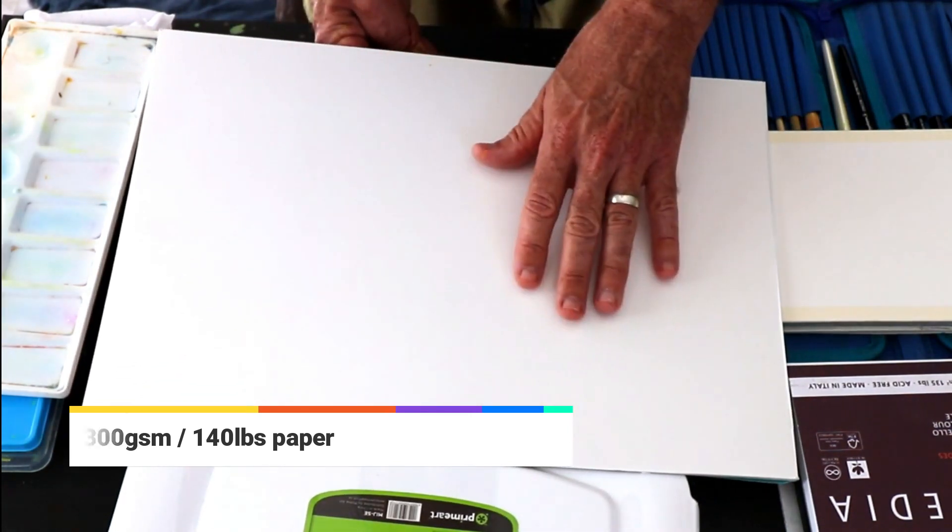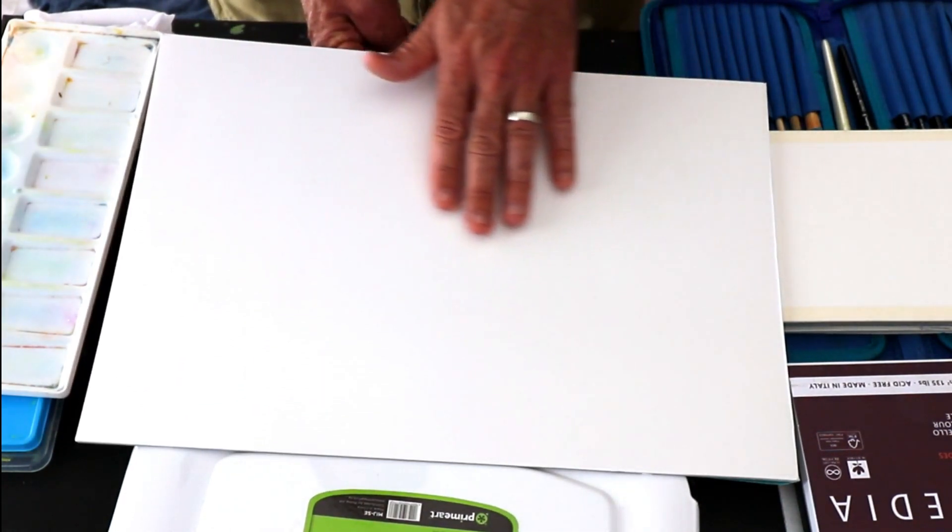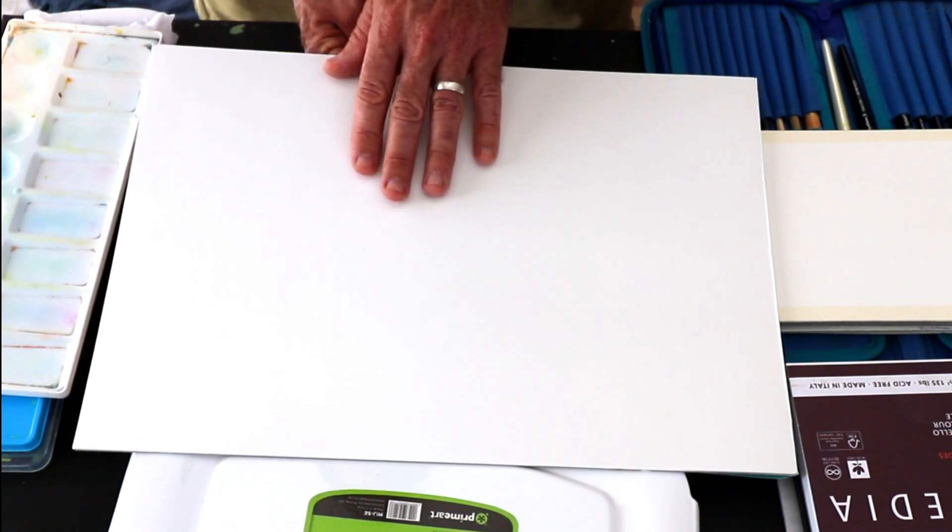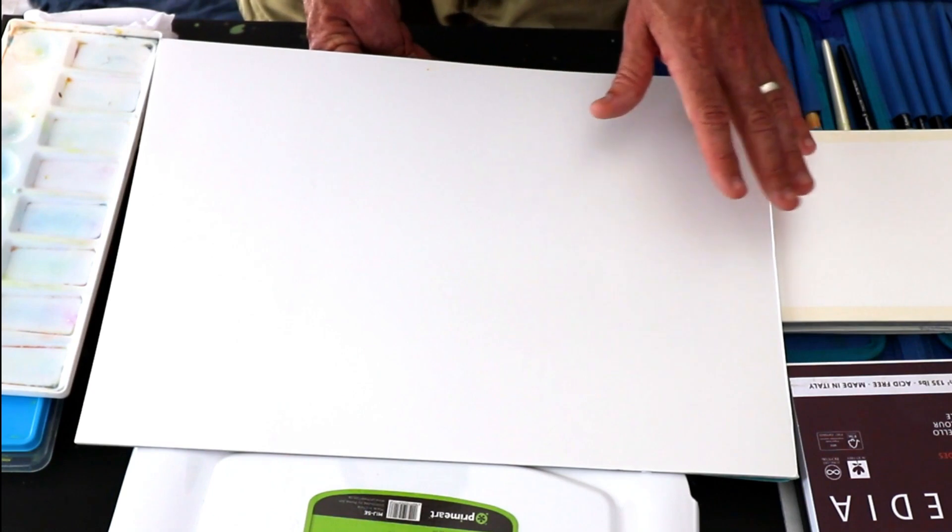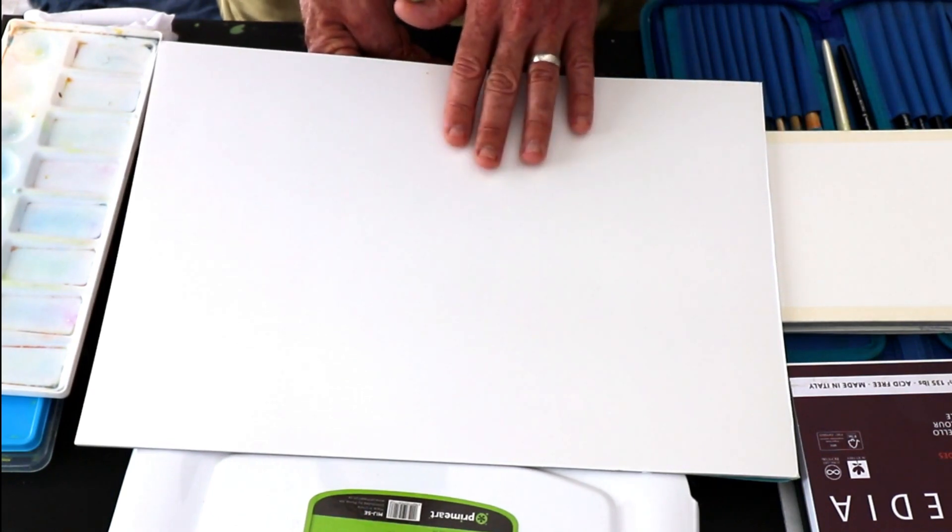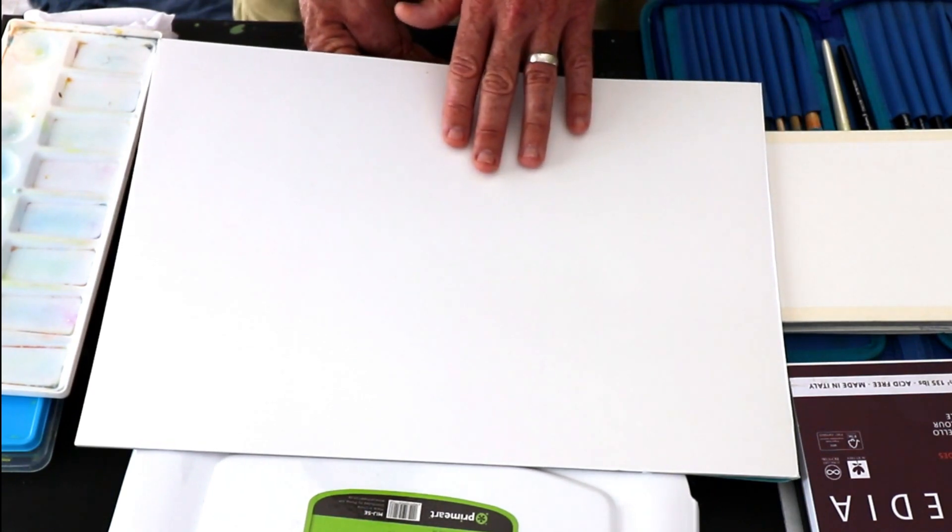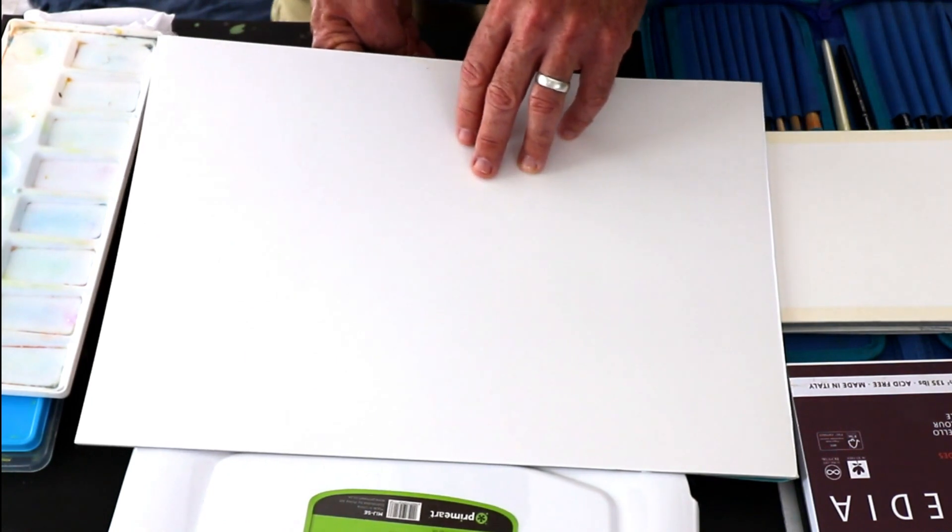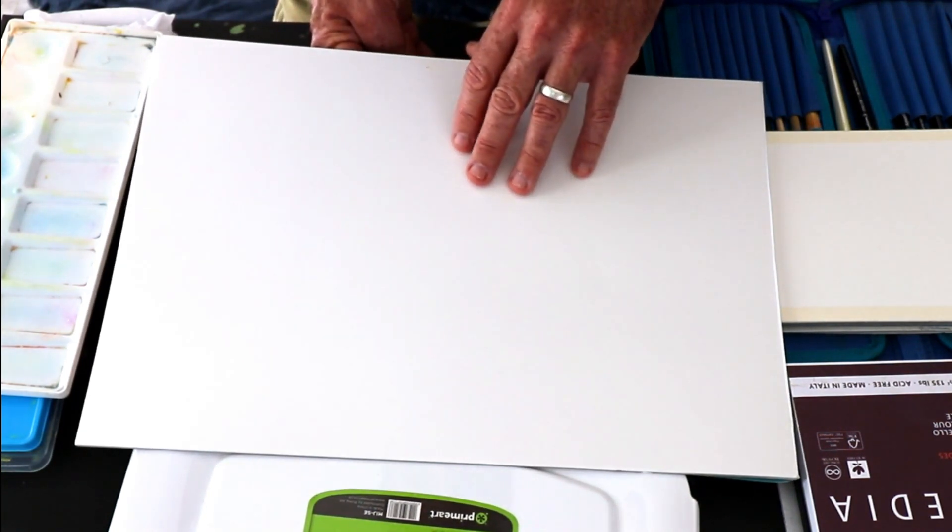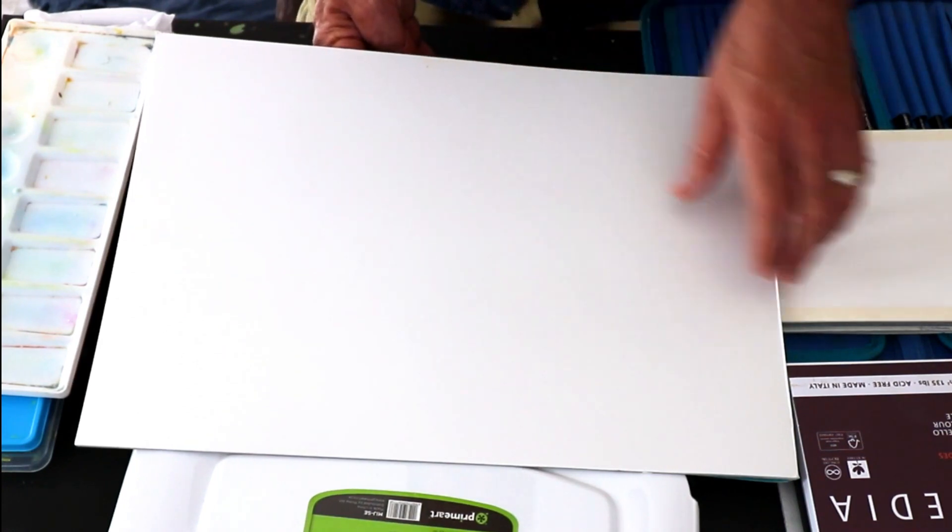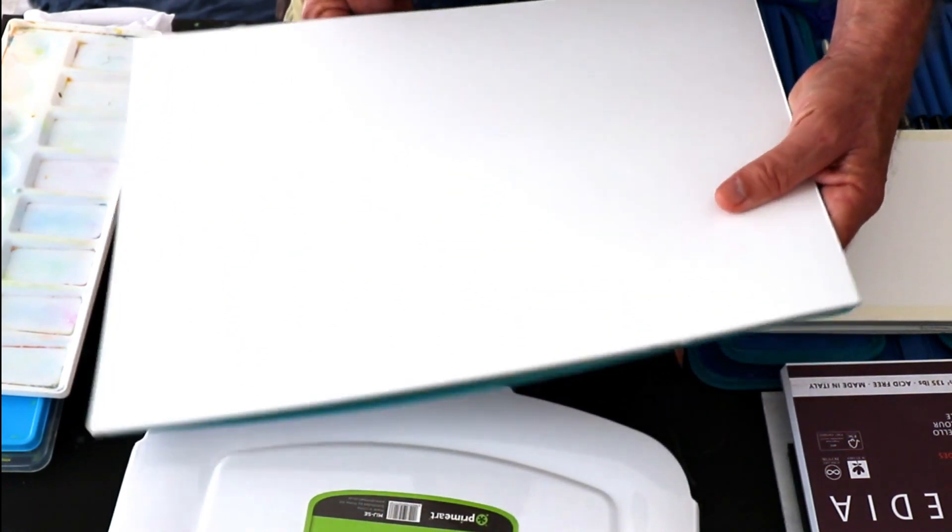But with hot press, you've got a very smooth surface. It can be perfect for certain subjects where you want that smoothness, maybe a portrait even. You've got a very smooth paper. Try them out and see what works best for you. There's not one that is particularly better than the other. It comes down to your personal preference.